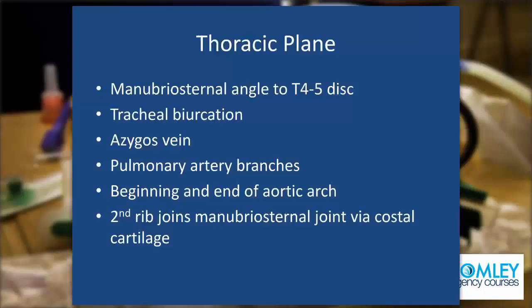In that plane, a number of important anatomical landmarks lie. The trachea bifurcates into the right and left main bronchi. It's also the point at which the azygous vein empties into the superior vena cava; the pulmonary artery branches left and right; and the beginning and end of the aortic arch. Anteriorly, it's also the point where the second rib meets the manubriosternal junction, where the costal cartilage of the second rib joins.